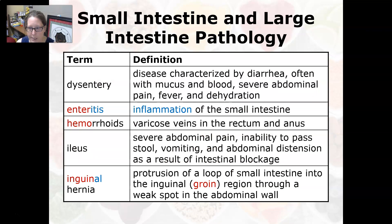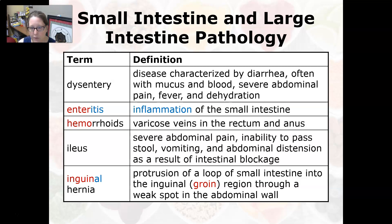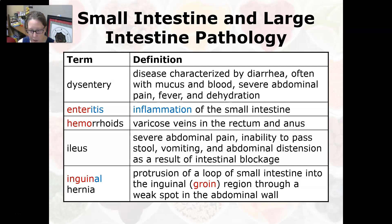Dysentery is a disease characterized by diarrhea often with mucus and blood, severe abdominal pain, fever, and dehydration. The main treatment is ensuring proper hydration. Enteritis is an inflammation of the small intestine. Hemorrhoids are varicose veins in the rectum and anus and can cause bleeding. Ileus is severe abdominal pain with the inability to pass stool, vomiting, and abdominal distension as a result of intestinal blockage.